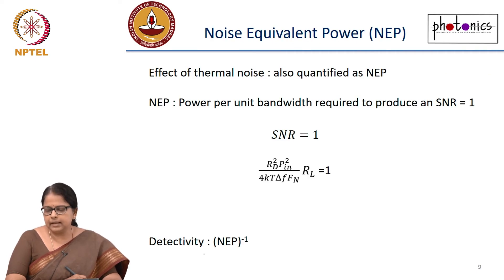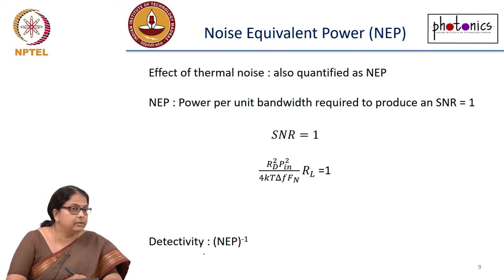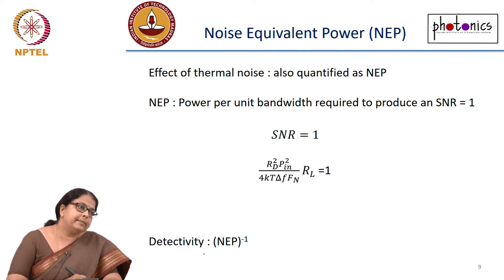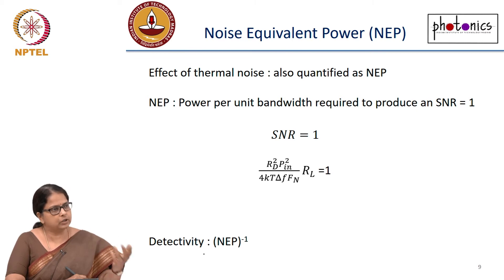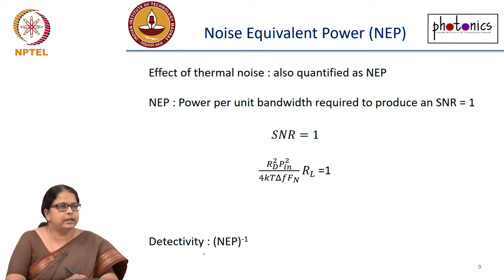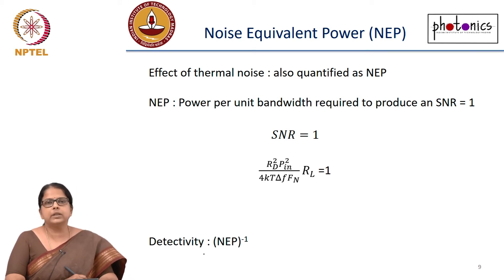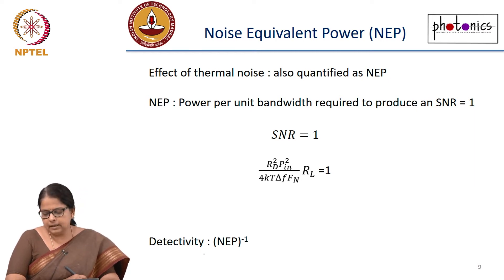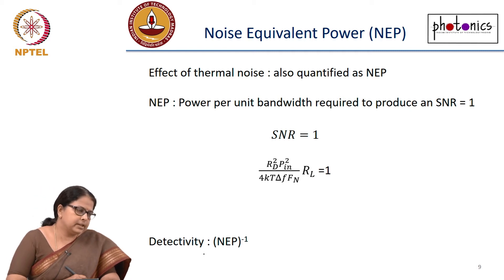There is one more parameter defined in a detector data sheet: NEP, Noise Equivalent Power. If you are trying to build a link and looking at a detector data sheet, they may not give you shot noise, thermal noise, R_L, or temperature separately. Instead, they give you NEP — and this is mostly for receivers limited by thermal noise, not shot-noise-limited systems.